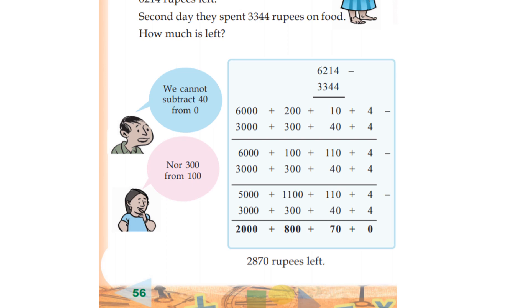6,214 minus 3,344. 4 minus 4 is 0. We borrow: 4 becomes 11, 11 minus 4 is 0. We borrow again: 2 becomes 12, 12 minus 3 equals...